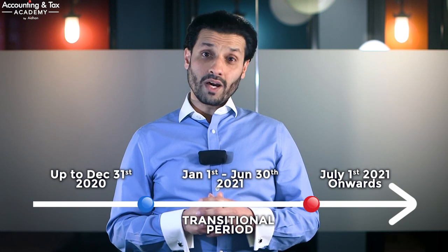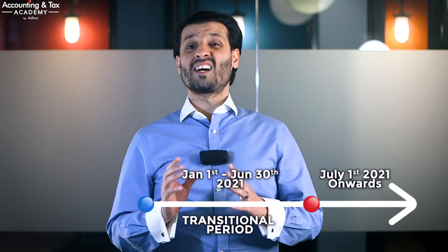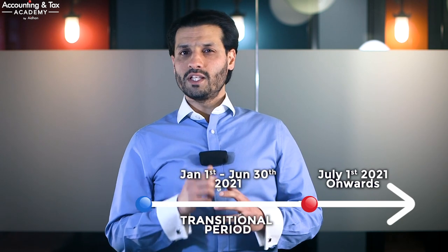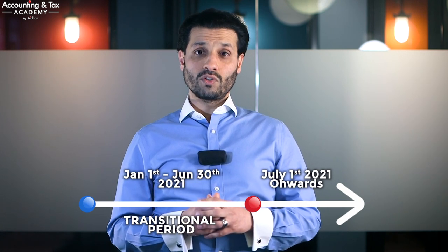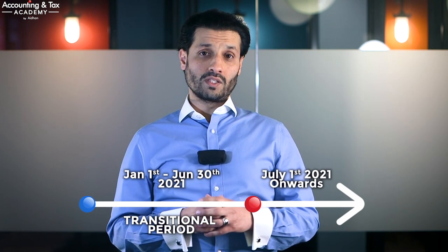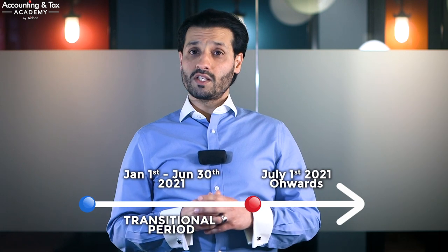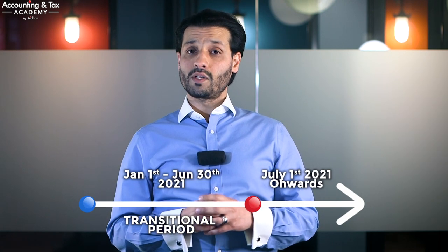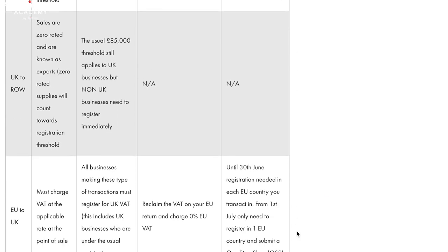There's no need to worry about what used to happen up to 31 December 2020 — this era has come and gone. What you need to focus on as an e-commerce trader is the six-month transitional period between 1 January 2021 and 30 June 2021, and then what happens after 1 July 2021. We're not going to go into depth on this in this video, but be sure to head over to our website where we've done a useful article on these three periods summarised in a handy table.